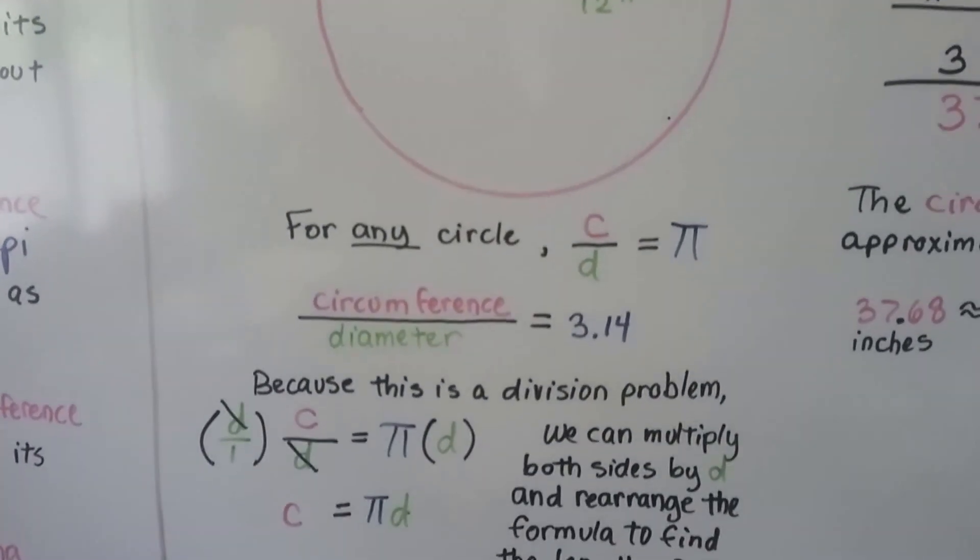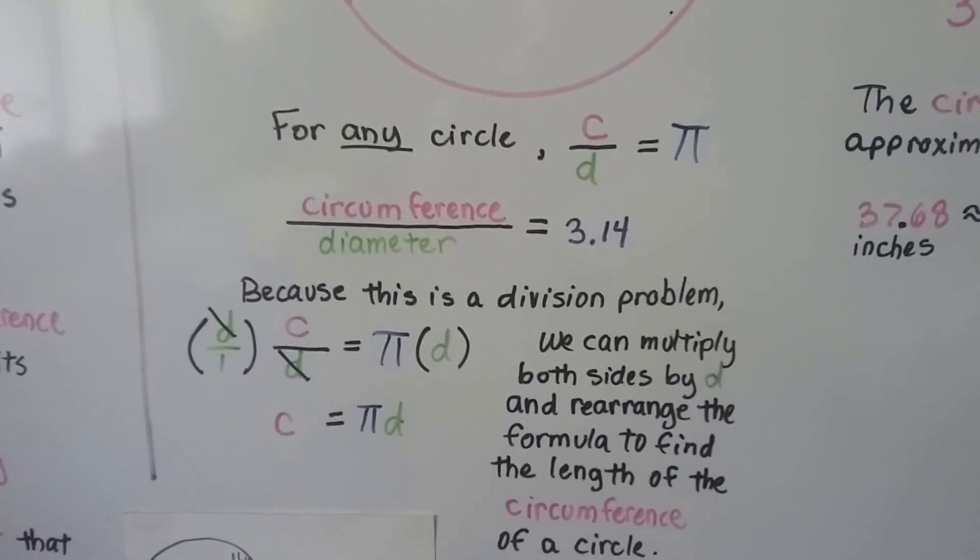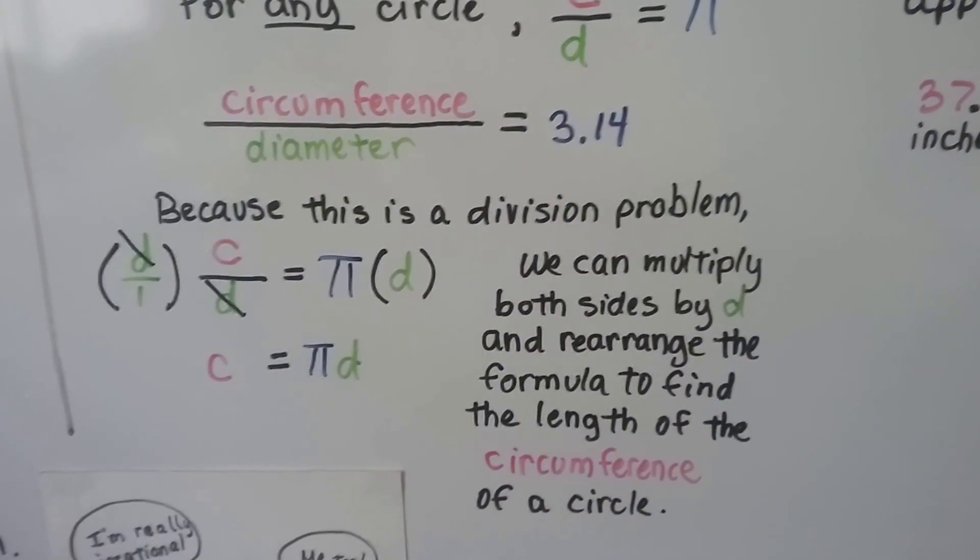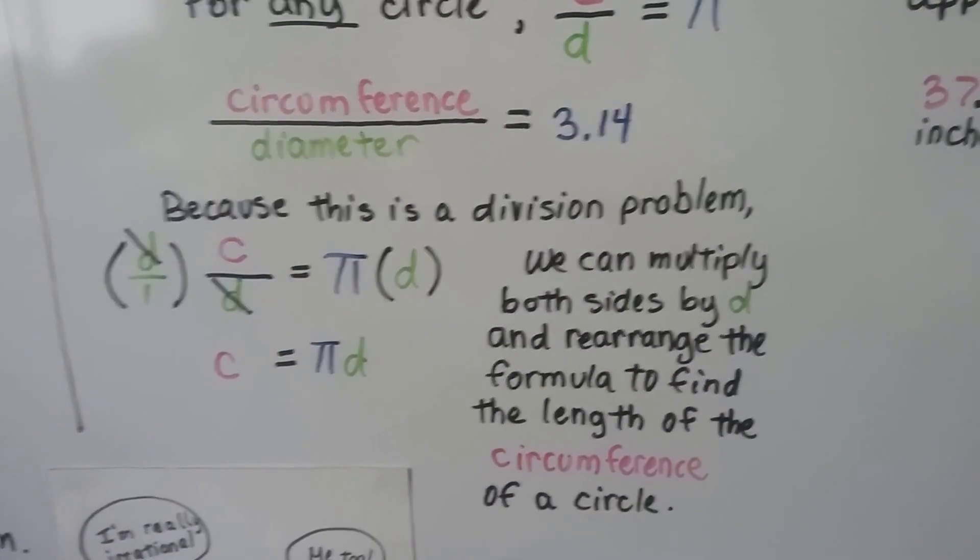Now because this is a division problem, we can multiply both sides by d, by that d for diameter, and rearrange the formula to find the length of the circumference of a circle.